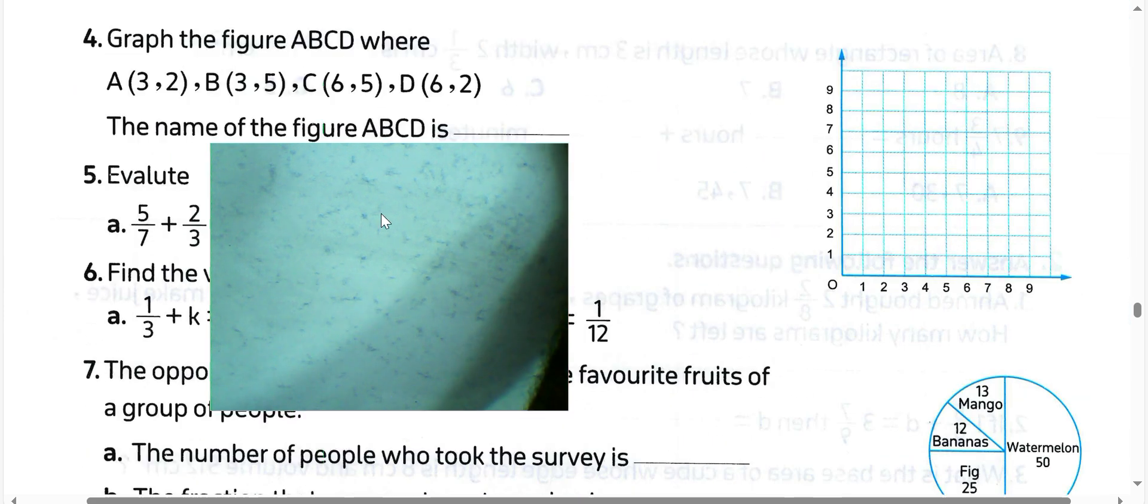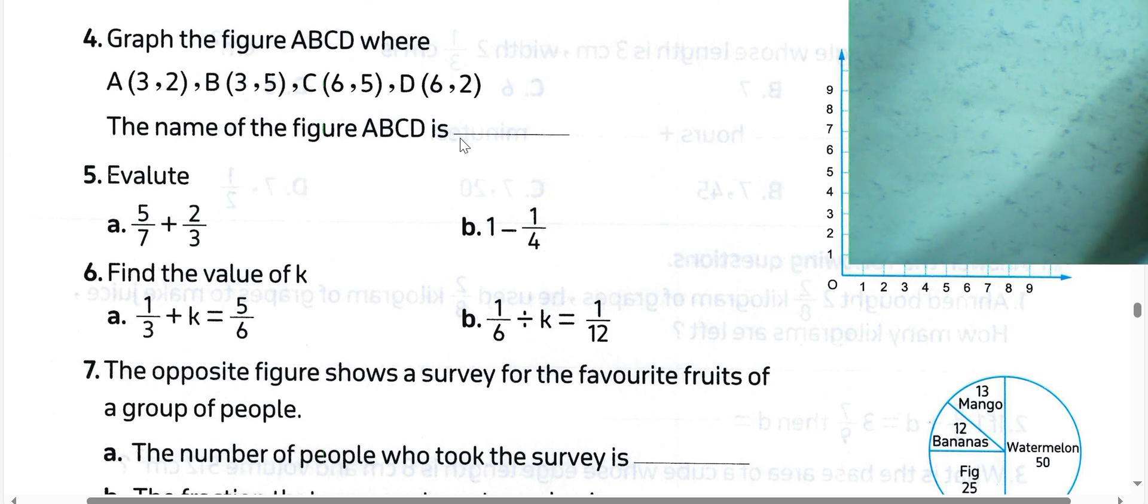Next question, graph the figure ABCD where A is (3,2), B is (3,5), C is (6,5), and D is (6,2). We can find the difference between coordinates: this figure we call it a square.